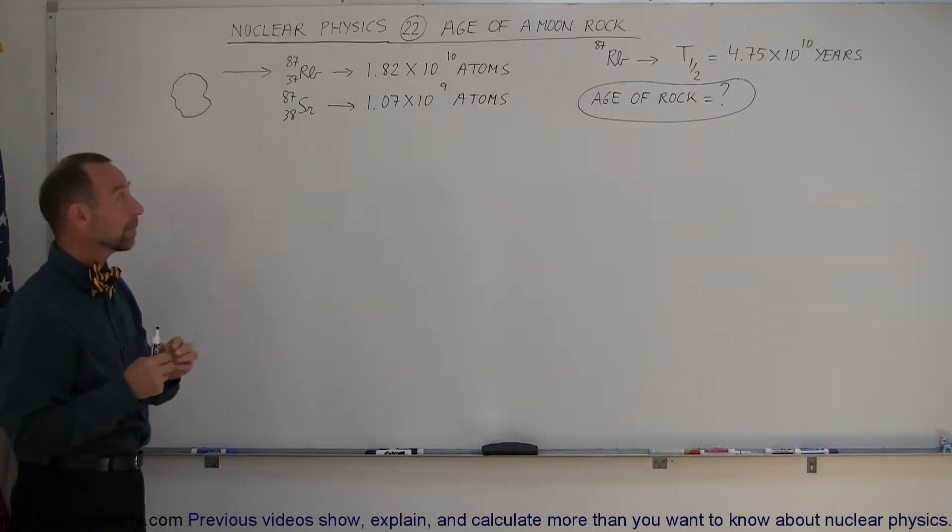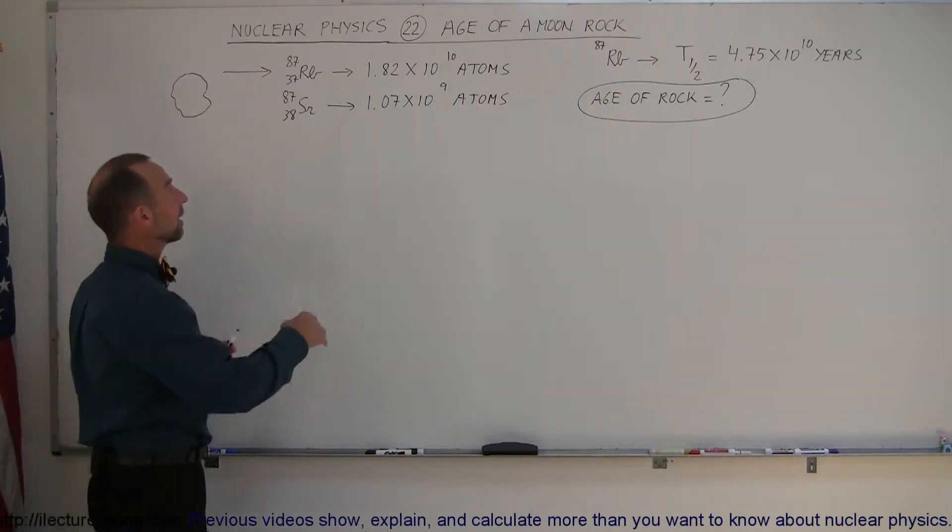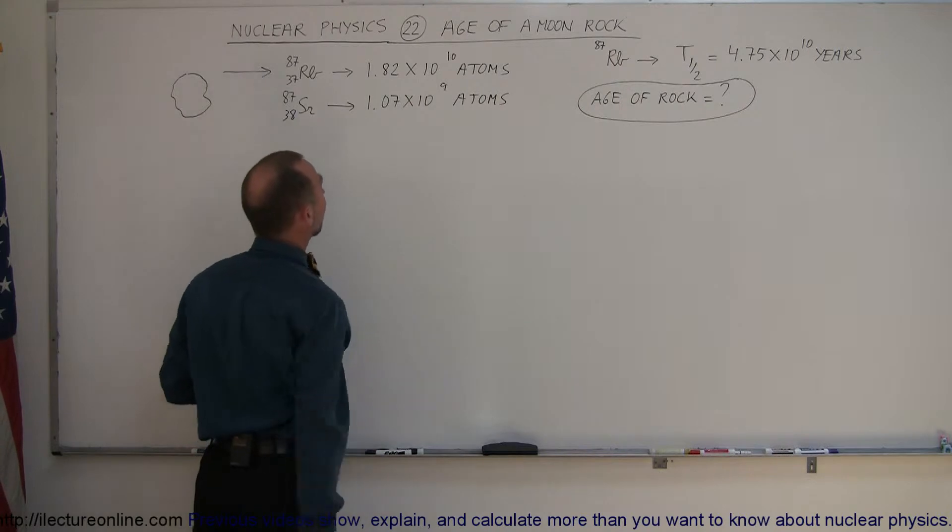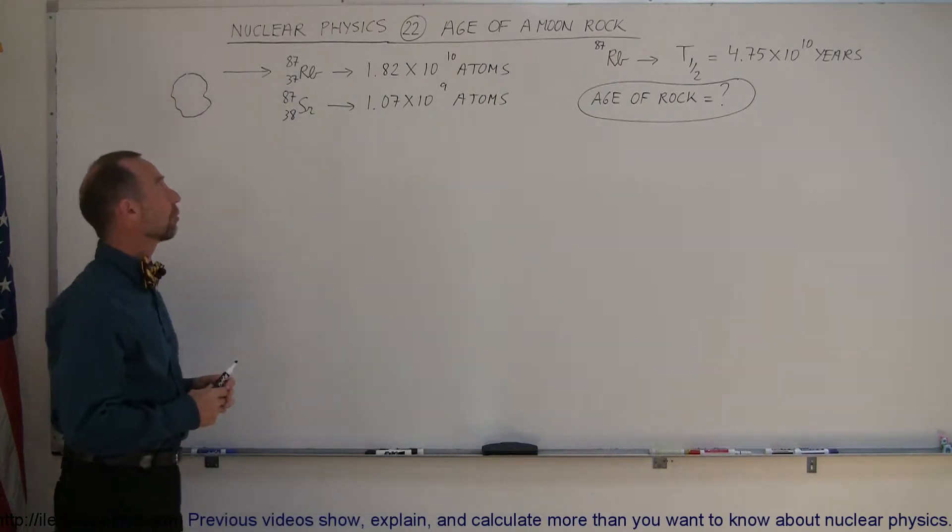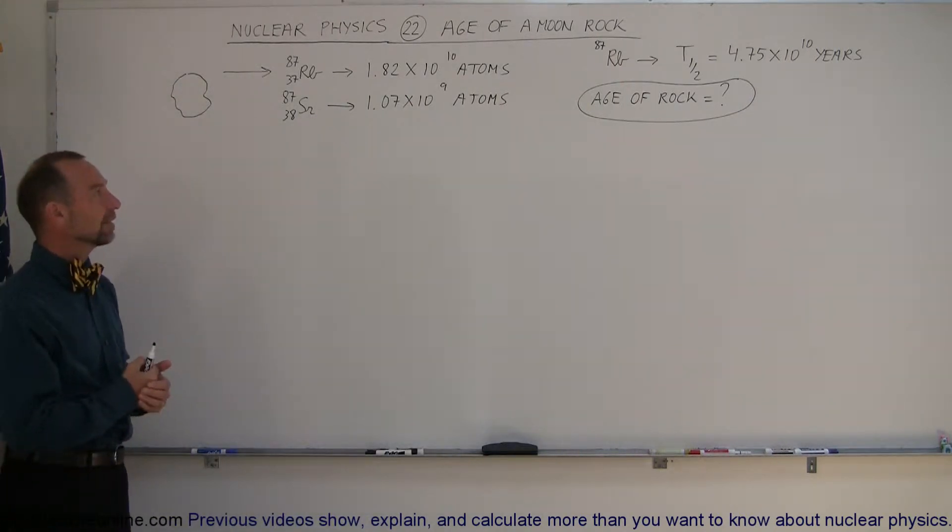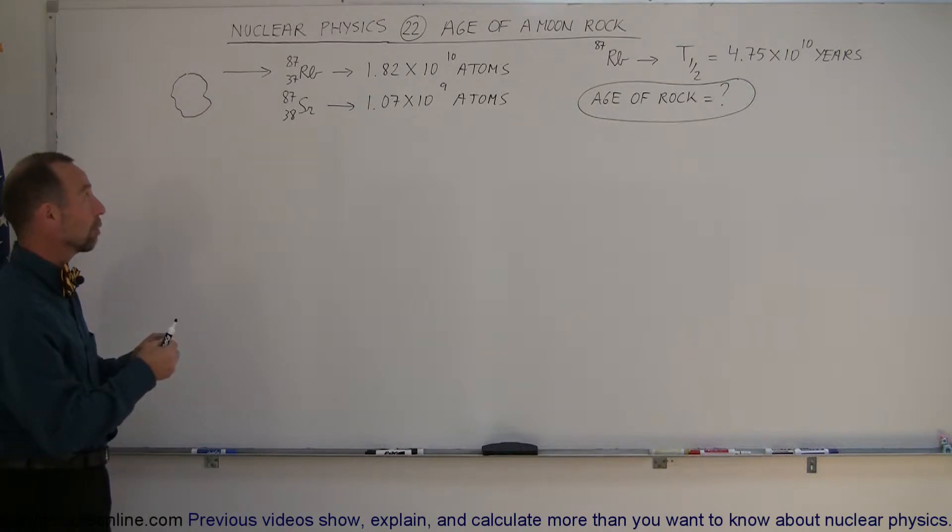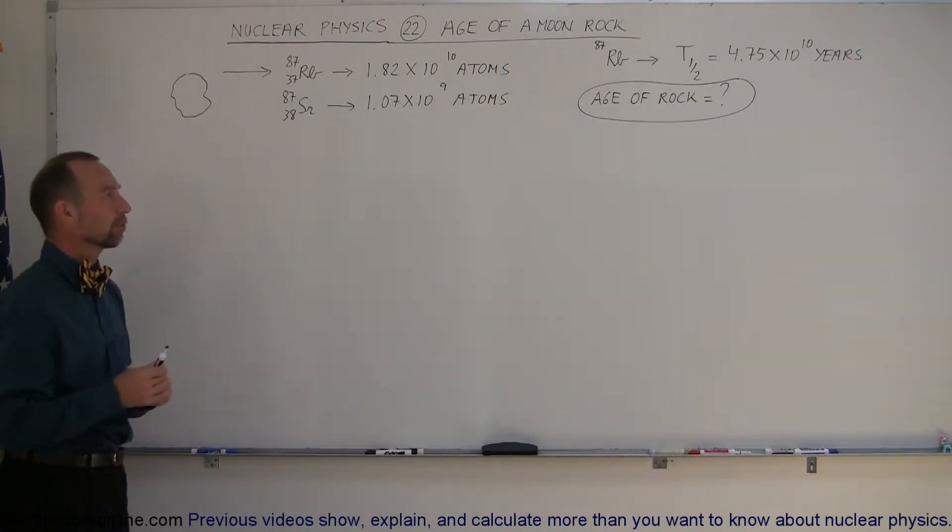When they chemically analyzed this particular rock, they found that it contained about 1.82 times 10 to the 10th atoms of rubidium and 1.07 times 10 to the 9th atoms of strontium. The assumption was made that there was no strontium in that rock when the rock was first formed. And then once the rock was formed and everything was locked in, as the rubidium began to decay, whatever strontium was formed was formed from the moment the rock was formed.